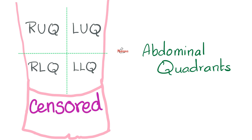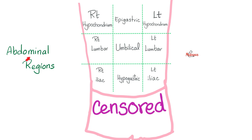In some rare cases, such as situs inversus totalis, where your viscera are basically flipped, you will see that the liver went to the left side and the spleen went to the right side. But in most people, the liver is here.